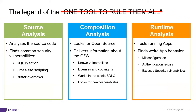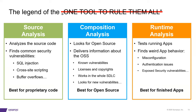You have to do source code analysis to analyze the source code and find vulnerabilities in your proprietary code. You have to do software composition analysis to find open source components and their connected risks like licenses, vulnerabilities, and operational risks. And then it's best to also test your running applications to see if there are any possible findings of misconfiguration, authentication issues, or exposed security vulnerabilities not found in the static code. So we divided the process into three toolings.